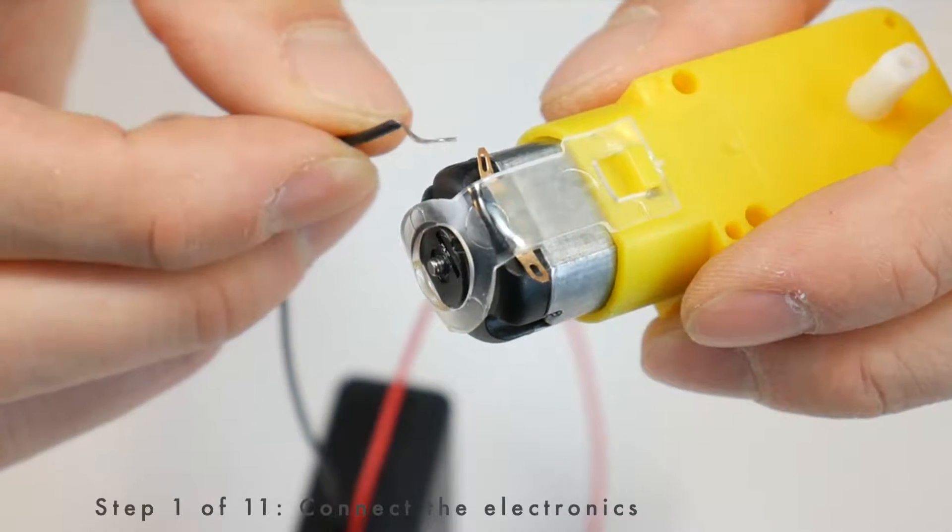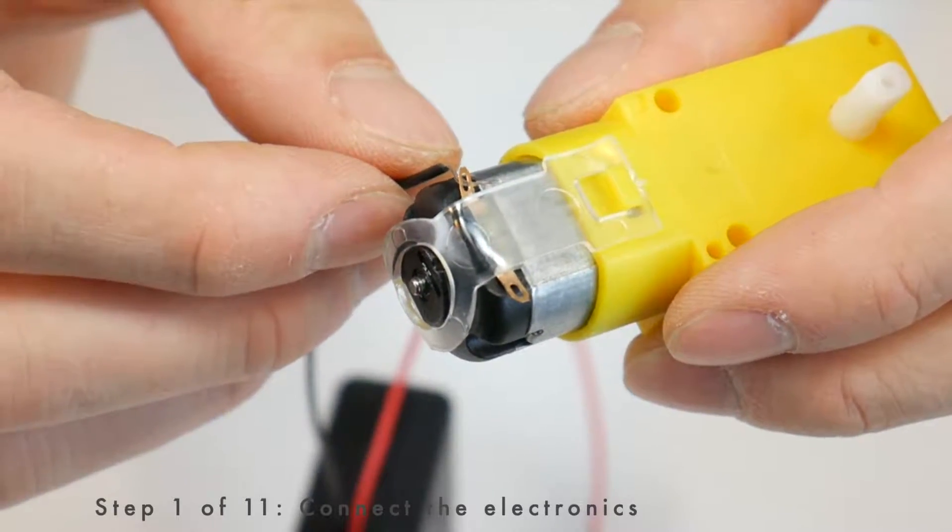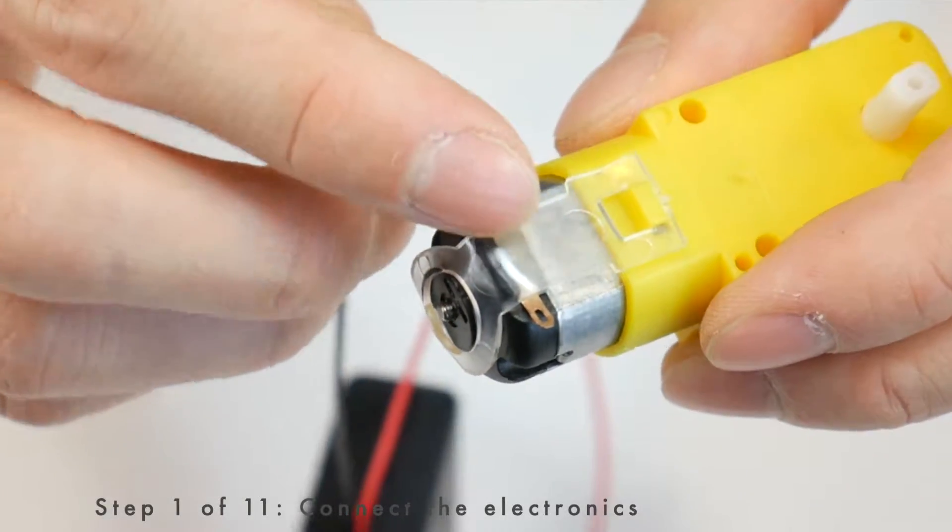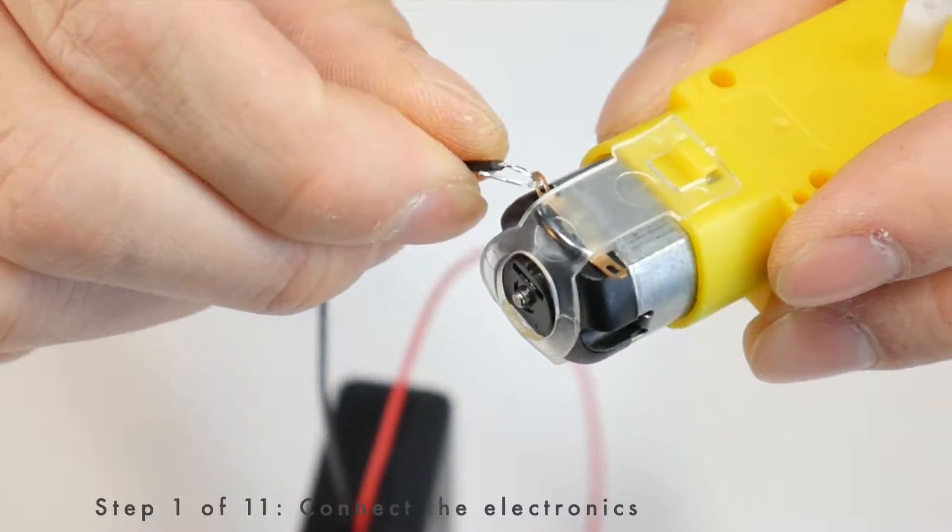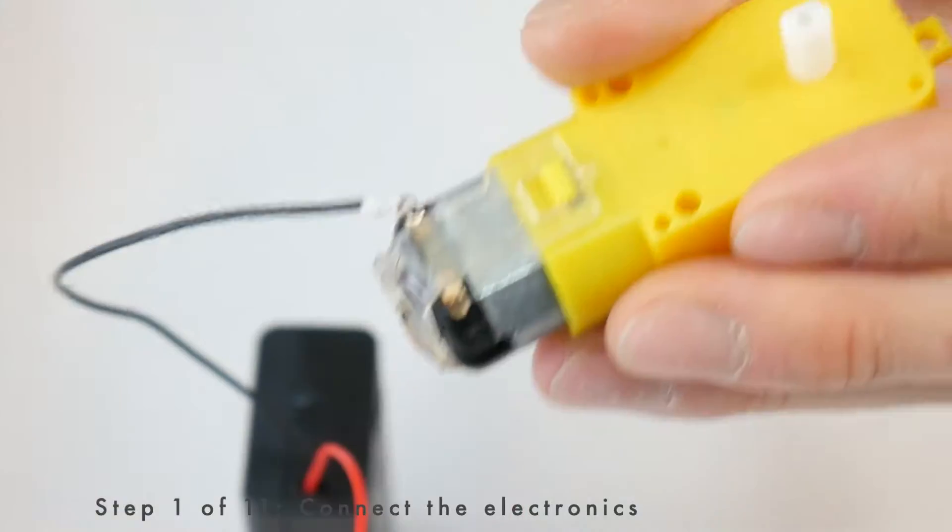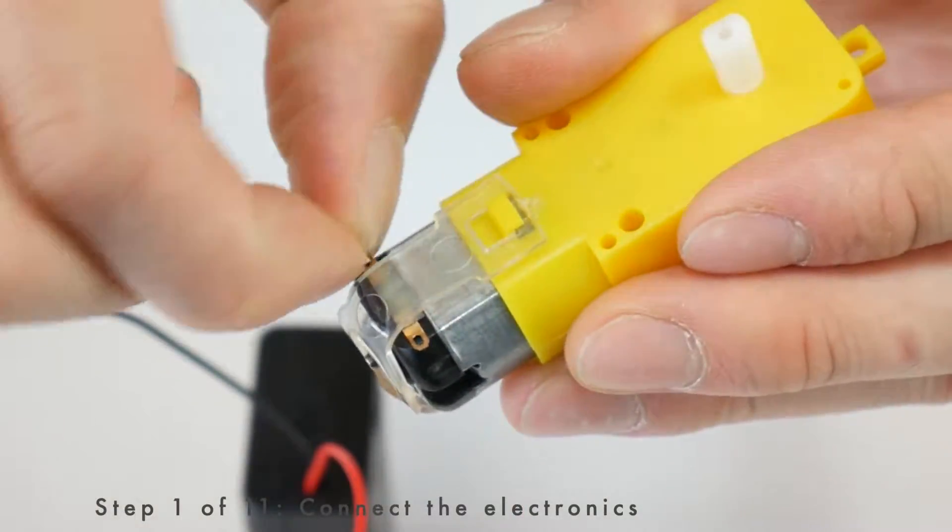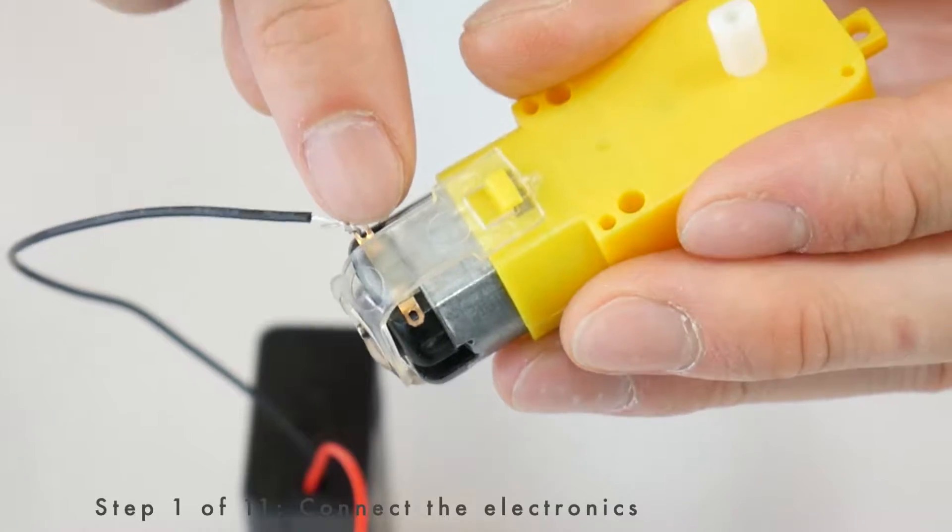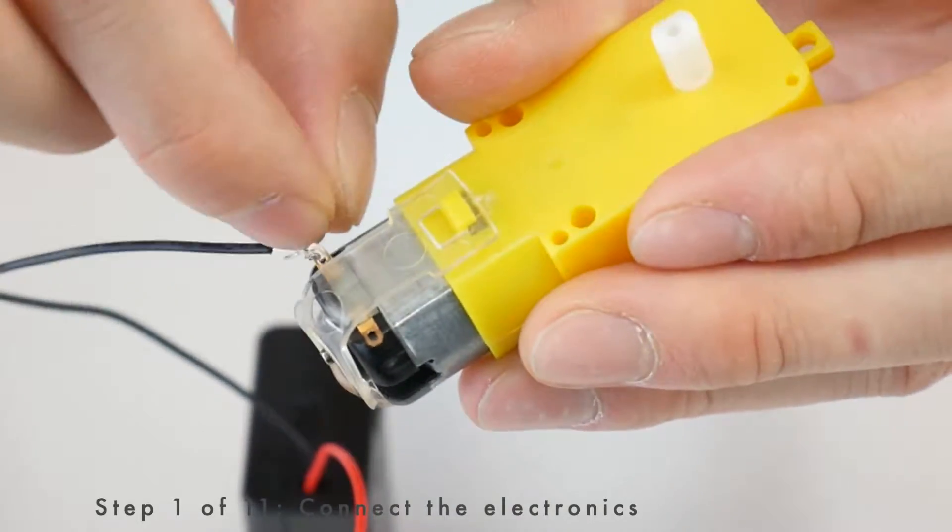Take one of the wires, put it through the hole on either of the tabs, fold the wire and then twist it as many times as you can. When you're twisting the wires, avoid pinching and twisting the metal tab on the motor. If you do that, it might break off.